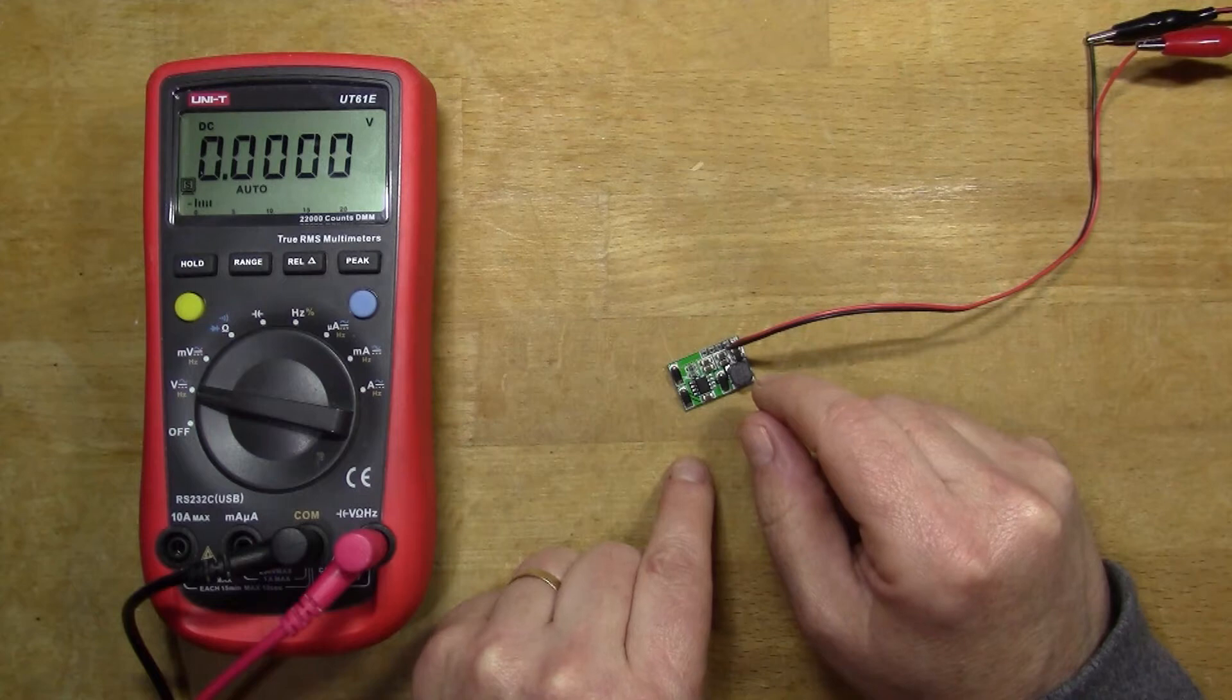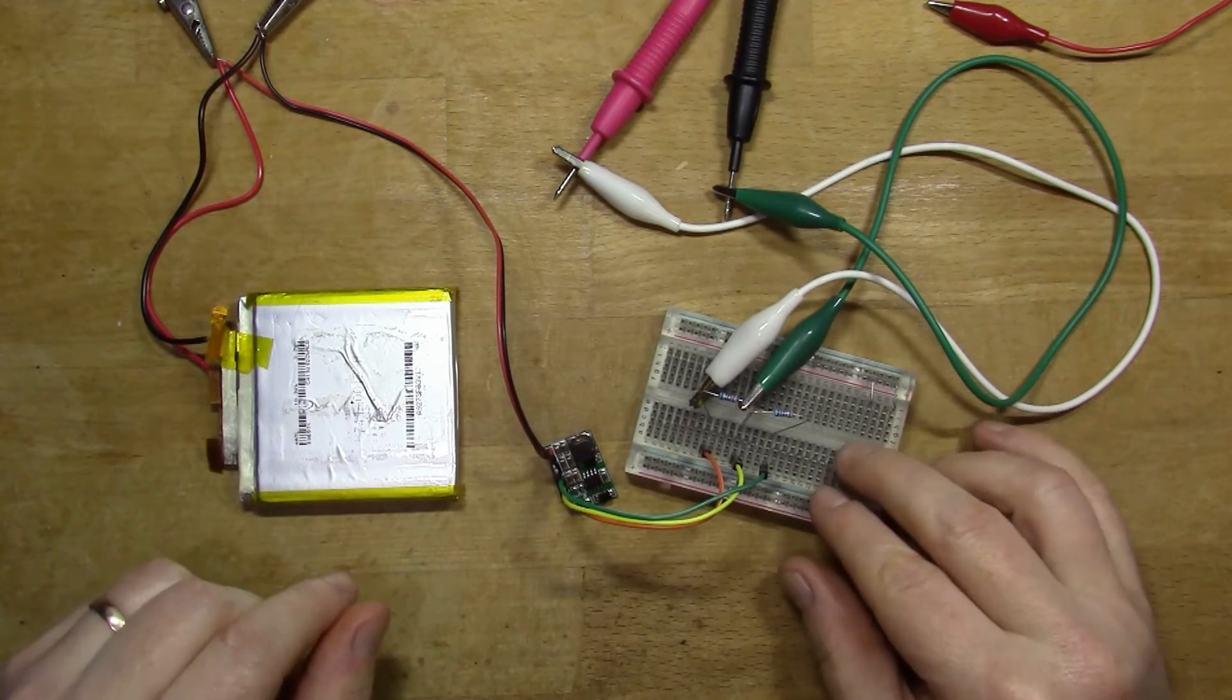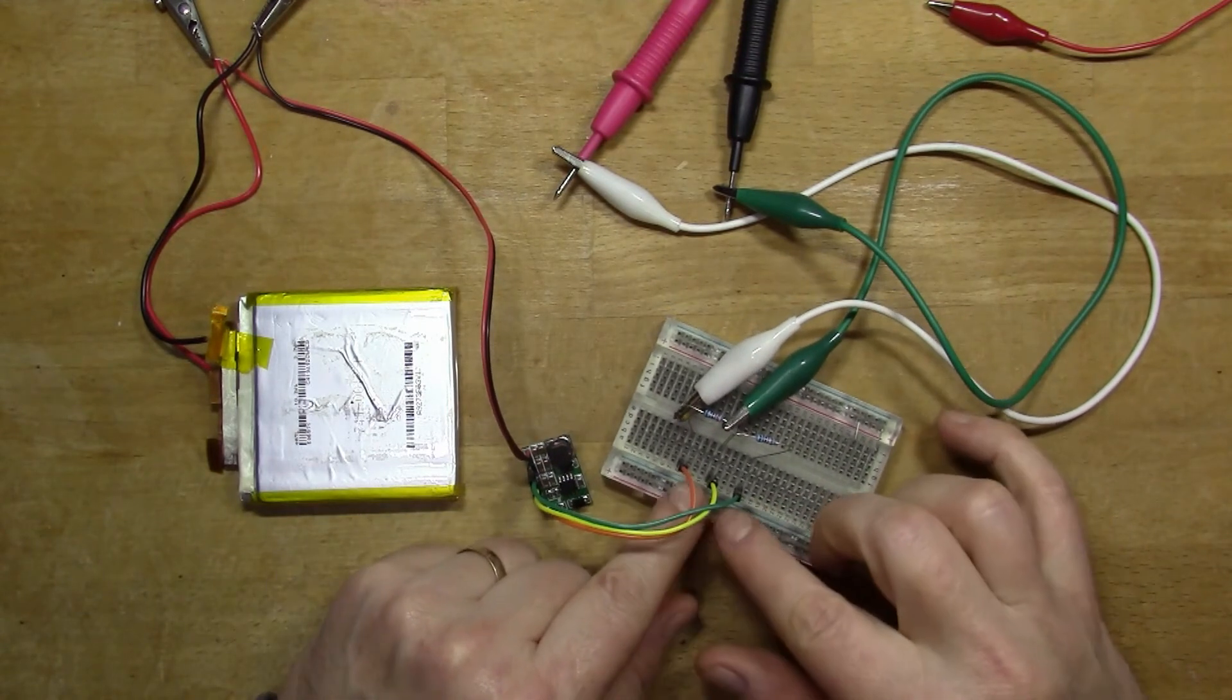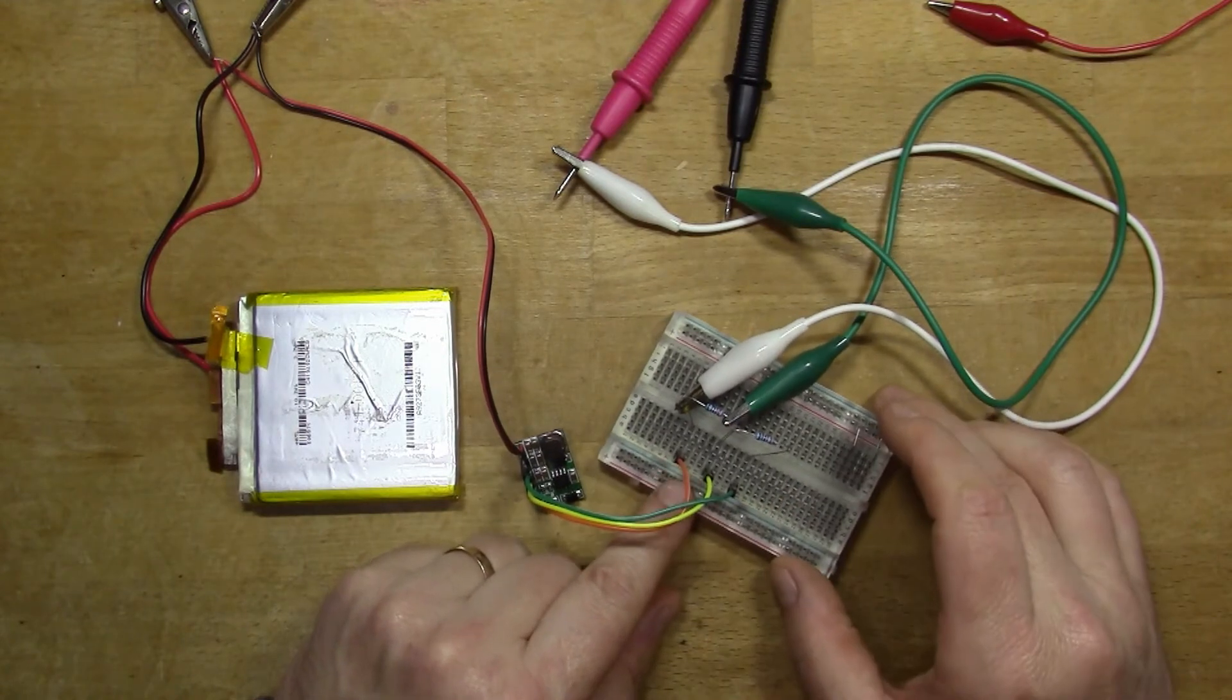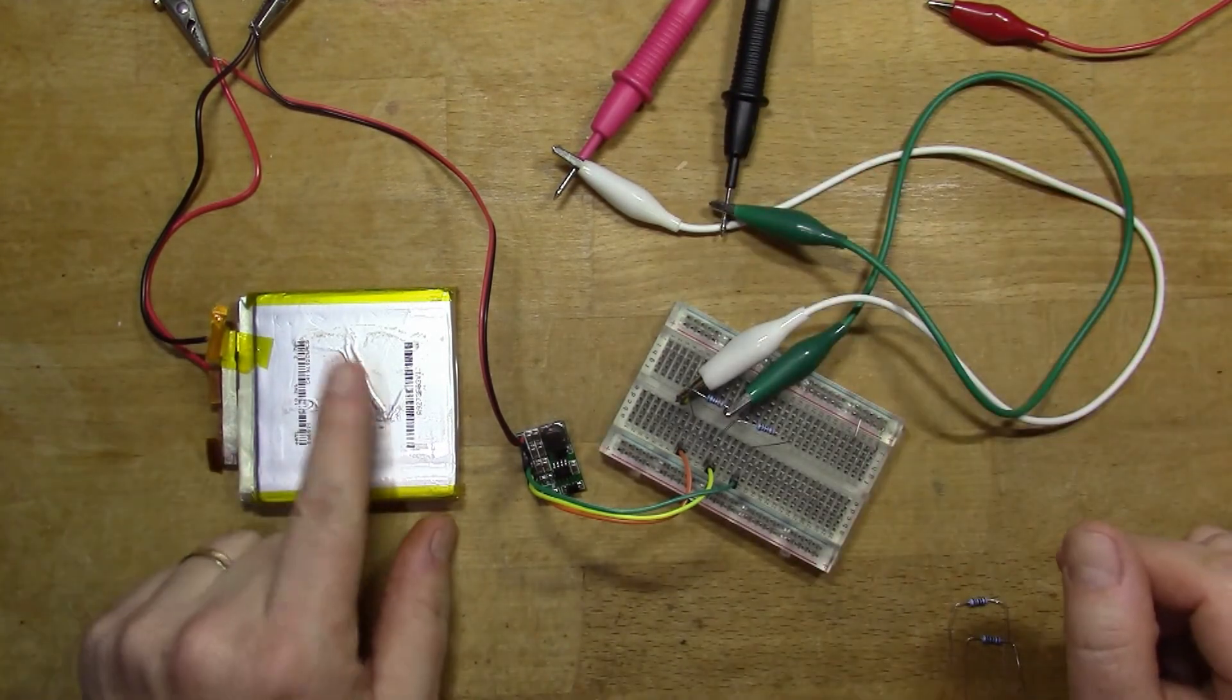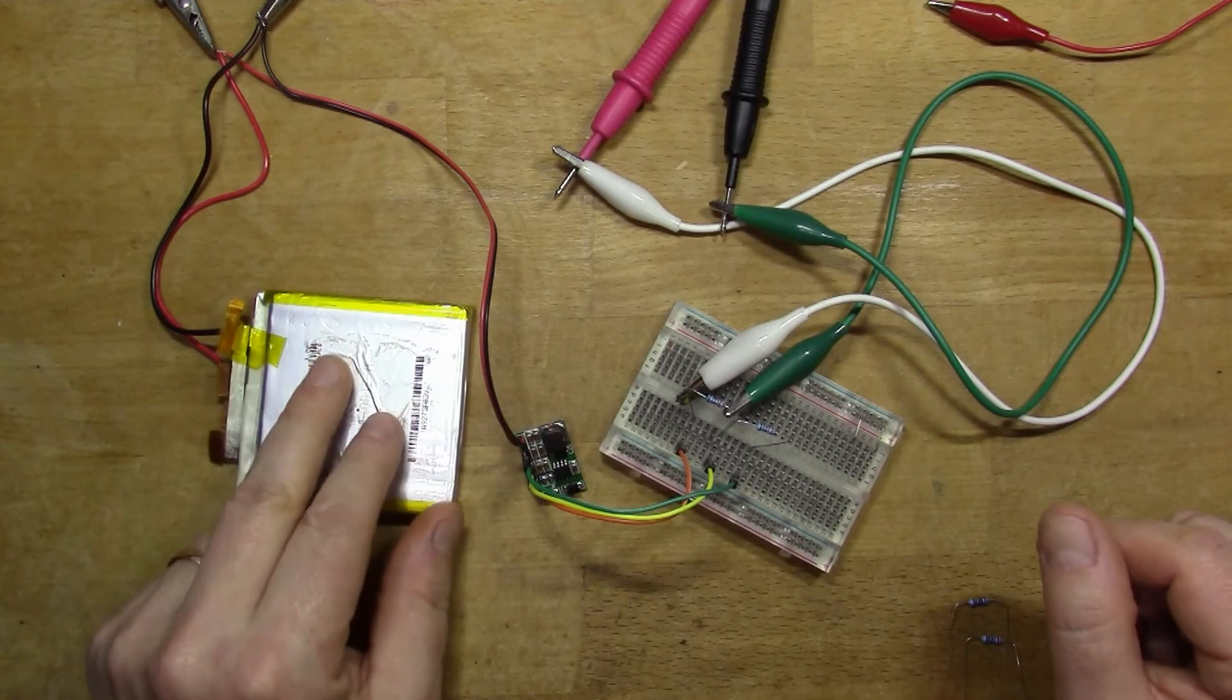I'll put some pin headers on this and we can put it on the breadboard and do some experimentation about what kind of load it can support. So I've got it all wired up on the breadboard now with pin headers on the circuit board so I can split out the plus minus 12 volts. It's a bit of a wirey mess, sorry about that. I've got my multimeter connected over here.